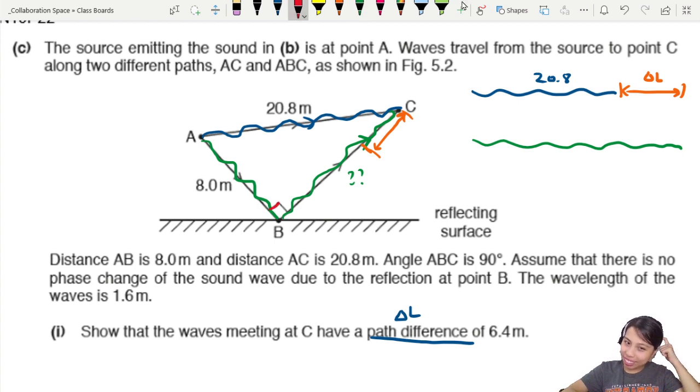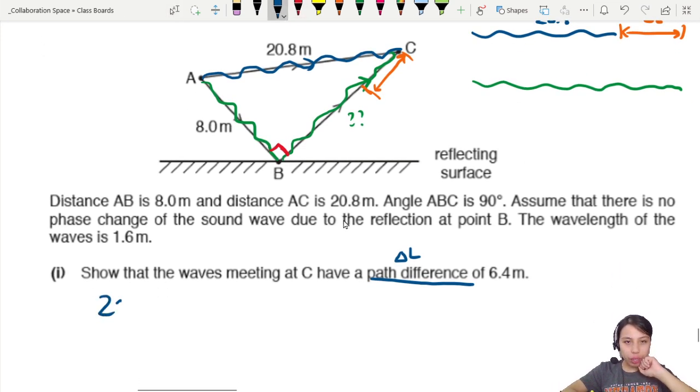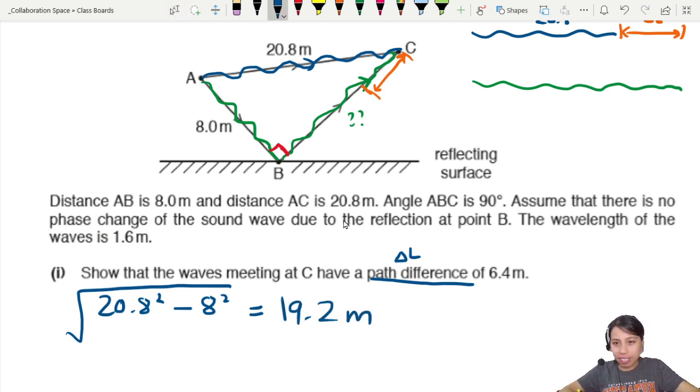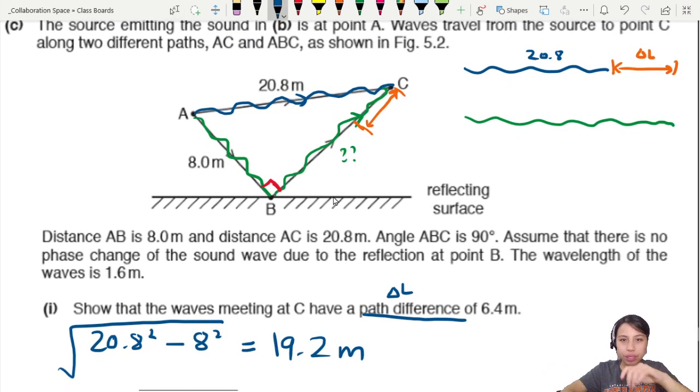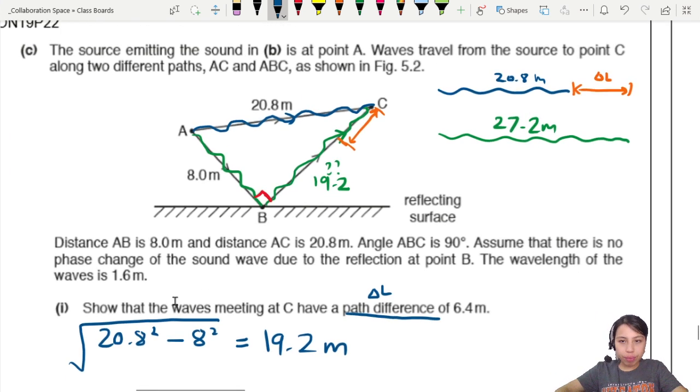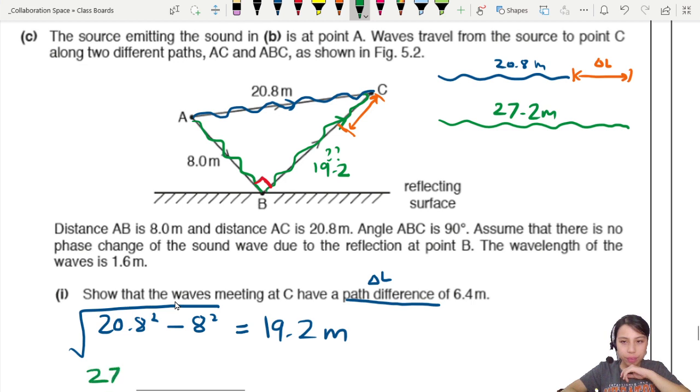So you just minus all. The blue one travels 20.8. The green one is how much? We need to know this side. If you recognize this is a right-angled triangle, you can use Pythagoras theorem to help you find what is this side here. So let's use Pythagoras. Hypotenuse is 20.8 squared minus 8 squared, which is one side, and you square root the whole thing. This would give you a value of about 19.2 meters.